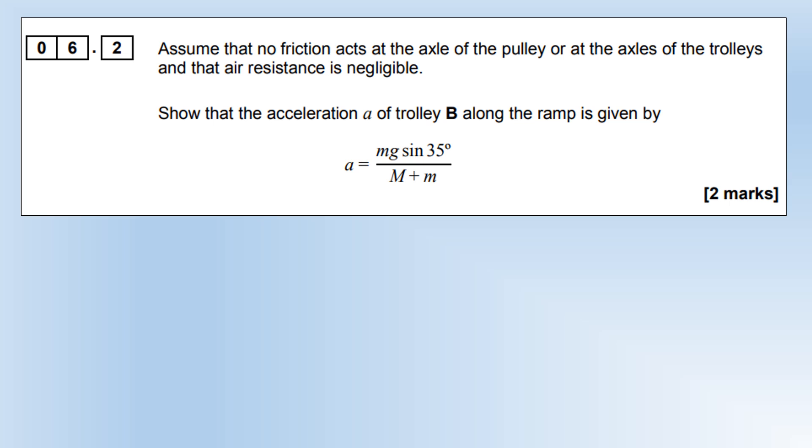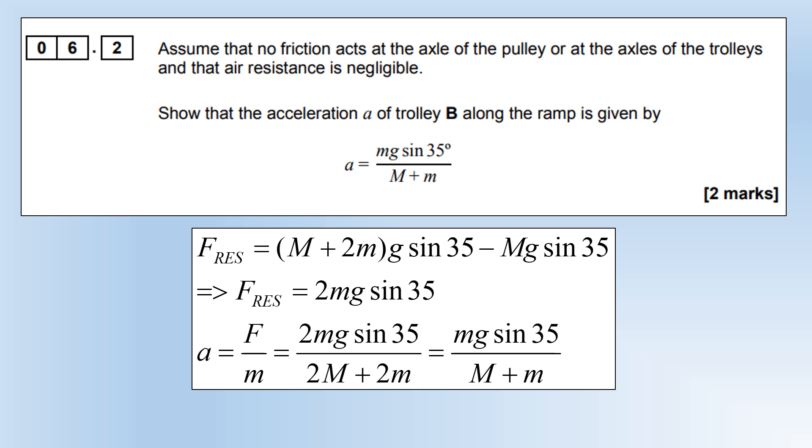Assuming no friction acts on the axle of the pulley or the axles of the trolleys and the air resistance is negligible, show the acceleration of trolley B along the ramp is given by this expression. The resultant force will be the component of weight force parallel to the slope from the heavier trolley minus the component of weight force parallel to the slope without the masses in it, so the resultant force is just 2mg sin(35). Acceleration is force divided by mass, so the resultant force divided by the total mass of the system, and the twos cancel out, giving you mg sin(35) over (M+m).